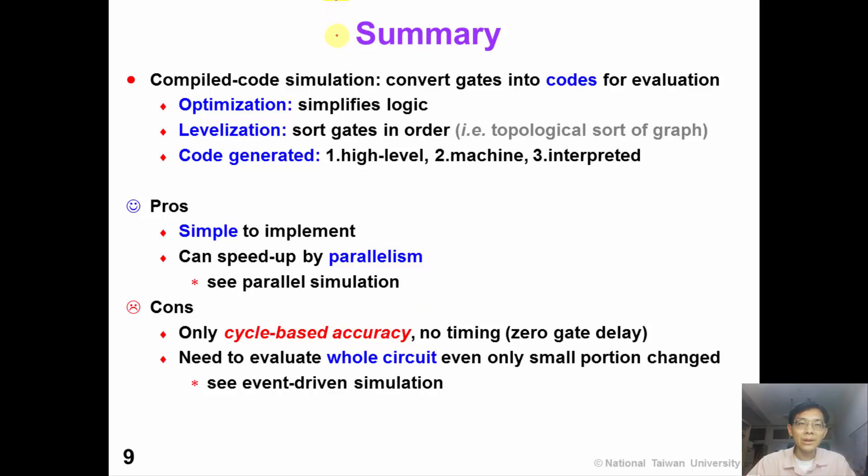So in summary, in this video, we have shown compiled code simulation technique, which converts gates into code for evaluation. We show logic optimization to simplify the logic and the logic levelization to sort the gate in correct order. By the way, this is also known as topological sort in the graph theory. And eventually we generate codes. There are three types of code: high level code, machine code, or interpreted code.